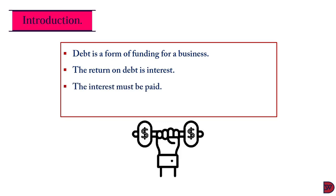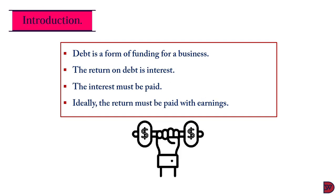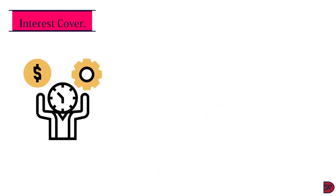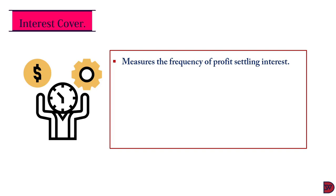The interest must be paid whether the business generates profit or not, and because the interests are periodic and based on the amounts borrowed, the business must earn enough profit to be able to pay the interest out of it. It is ideal that the business invests the money wisely to generate high enough returns. If that doesn't happen, the business is going to borrow to pay the interest or pay out of its capital, which is going to spell doom for the business. So when we talk about interest cover, we are looking at the number of times that a business's profit can settle the interest on its outstanding debts.